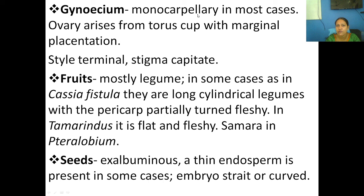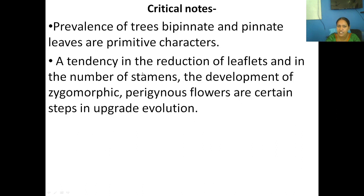A critical note: the leaves are pinnate and bipinnate, which is a primitive character. The advanced characters include perigynous flower, zygomorphic flower, and stamens outnumbering sterile appendages — these represent advanced evolutionary characters. Some plants in this family have timber-yielding and gum-yielding importance; Tamarindus is edible; and a red dye is obtained from the Haematoxylin plant.